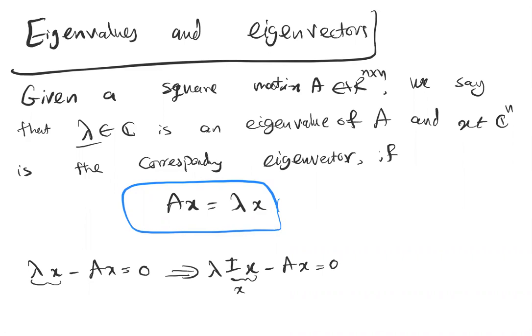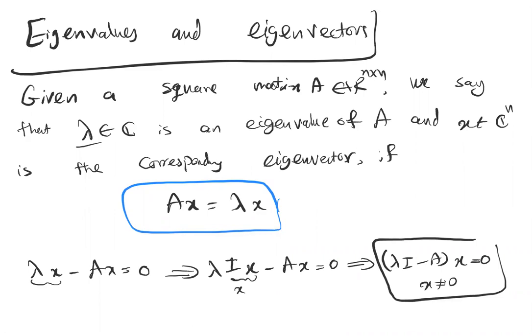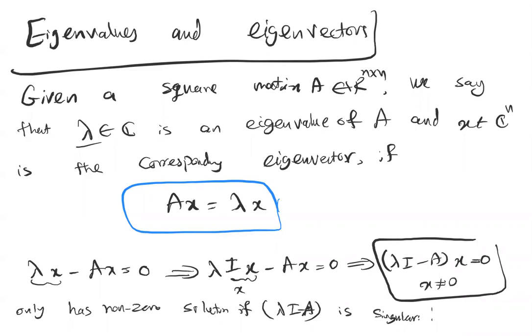We can manipulate this equation: A·x − λ·x = 0, which gives (λI − A)·x = 0, where x is non-zero. This only has a non-zero solution if (λI − A) is singular, which means det(λI − A) = 0.